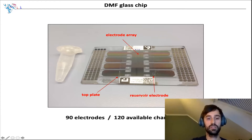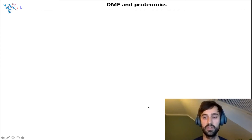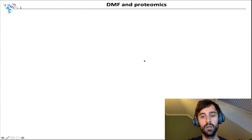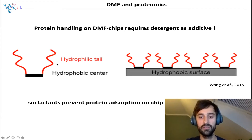Moving to proteomics — you could ask yourself, why aren't many people already using DMF to move proteins around for LC-MS analysis? The one inherent problem to overcome is that we need the hydrophobic surface of these chips to ease the movement of droplets. But proteins tend to adsorb to hydrophobic surfaces, which leads to so-called fouling of the surface. We can overcome this by the addition of detergents, and the best anti-fouling properties are found for so-called block co-polymer detergents. These detergents contain a hydrophobic center, which passivates the hydrophobic surface of the chip.